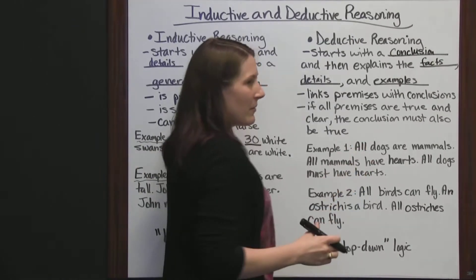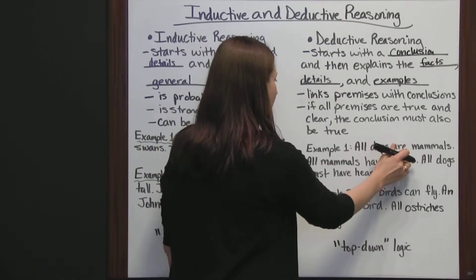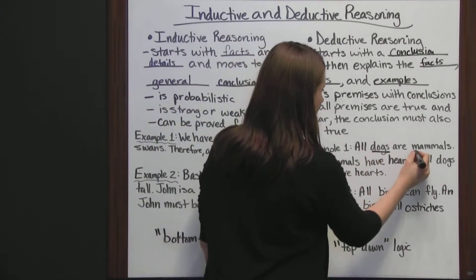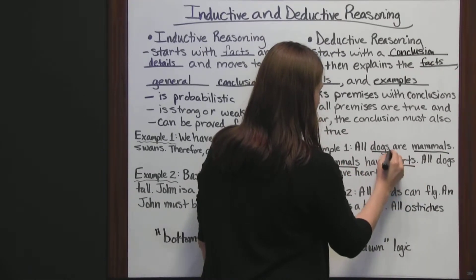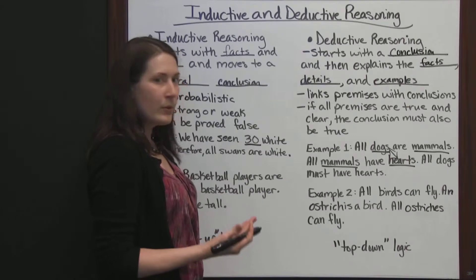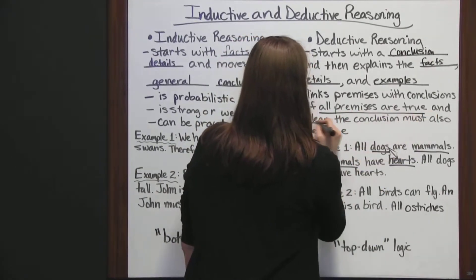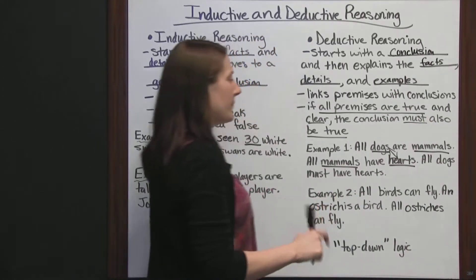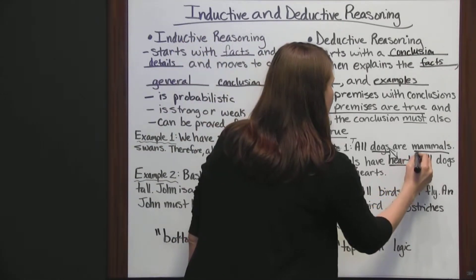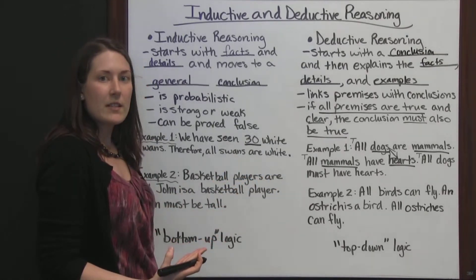You start with this: All dogs are mammals. All mammals have hearts. Based on the fact that all dogs are mammals and all mammals have hearts, all dogs must have hearts. Dogs are mammals and mammals have hearts, which means dogs must have hearts since they are mammals and all mammals have hearts. This is a true conclusion because all the premises are true. If all premises are true and clear, then the conclusion must also be true. All dogs are mammals — true. All mammals have hearts — true. Therefore, all dogs must have hearts — true. This is a true conclusion based on deductive reasoning.